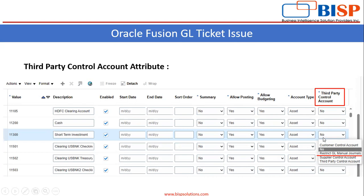When you apply this restriction on a value, it will not be visible in the list of values when you try to create a manual journal using that value. You can see there is an option available: Restrict GL Manual Journals. When you apply this restriction, the value will not be available at the time of creating manual journals.